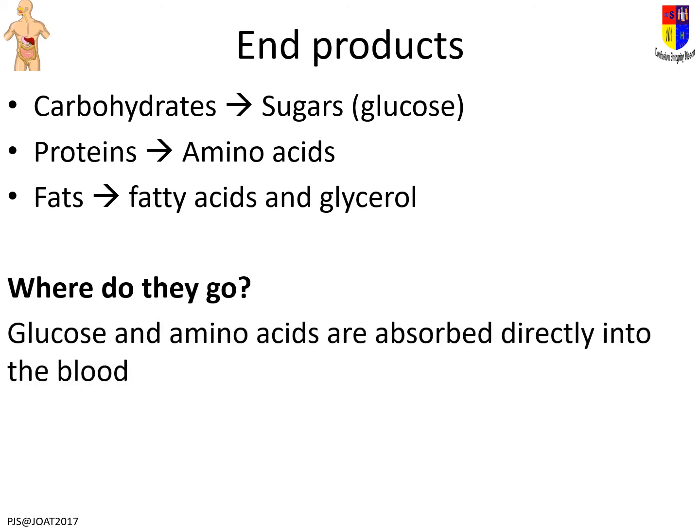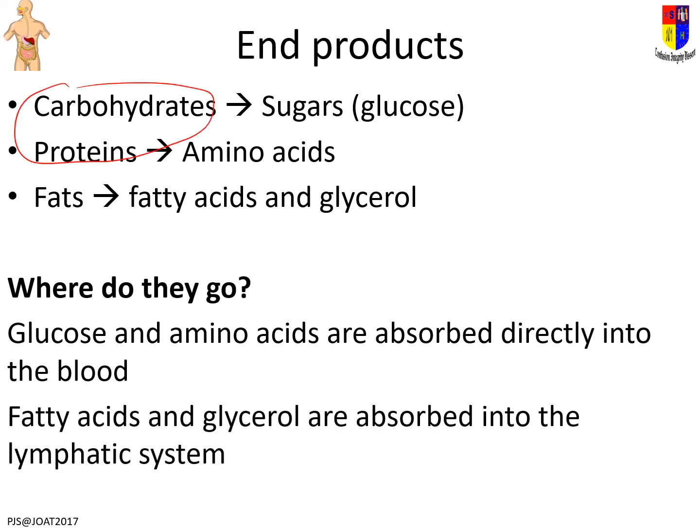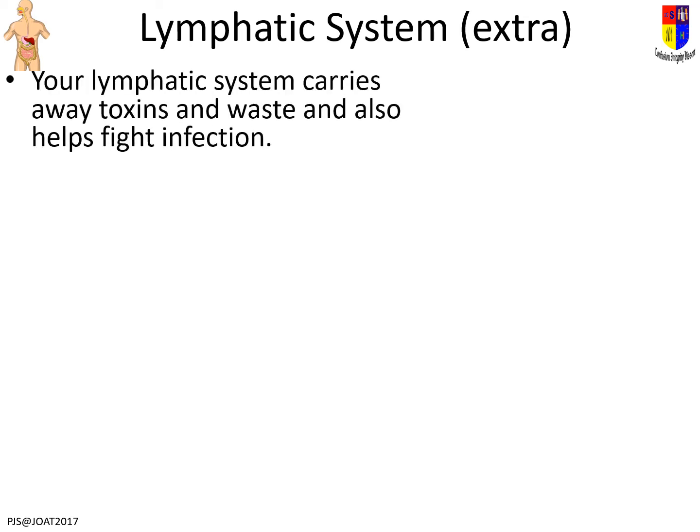There are two different destinations for these end products. Glucose and amino acids — from carbohydrates and proteins — both end up in the blood. But fats go into the lymphatic system, which we haven't really talked about. It's a quick aside: the lymphatic system is actually really important, doing all sorts of things that you don't necessarily want in the blood.